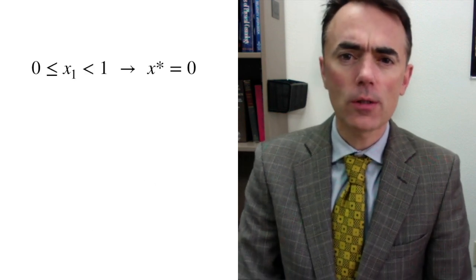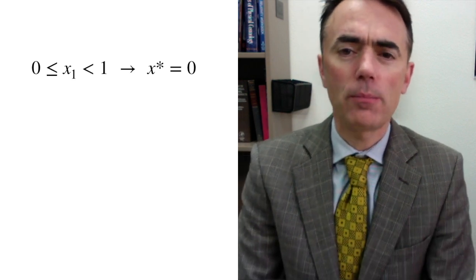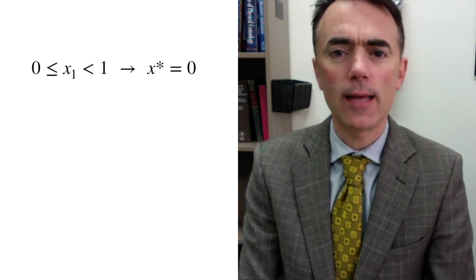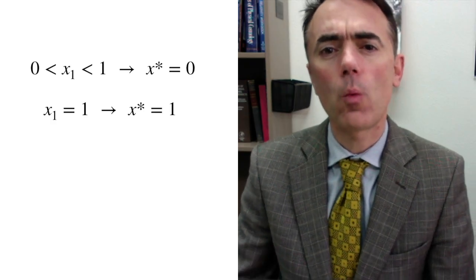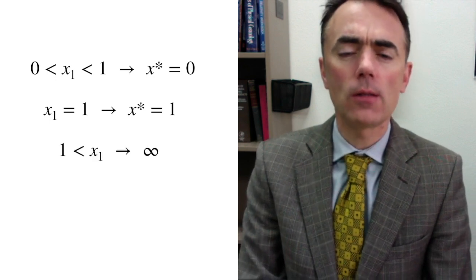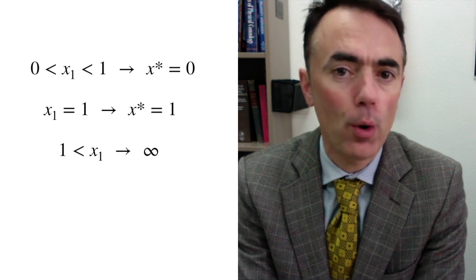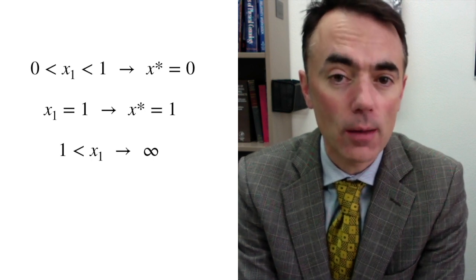If we start with any number greater or equal to 0 and smaller than 1, the map tends to 0. If we start at x equals 1, we end at 1. If we start at any number larger than 1, the system diverges. We say that 0 is a stable fixed point, while 1 is an unstable fixed point.